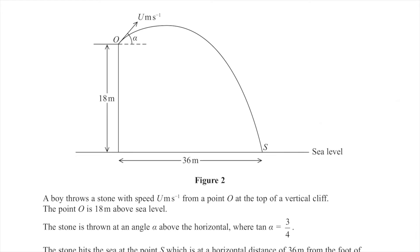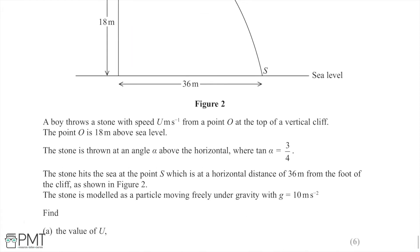In this question, a boy throws a stone with speed u meters per second from a point O at the top of a vertical cliff. Point O is 18 meters above sea level. The stone is thrown at angle alpha above the horizontal, where tan alpha equals 3 over 4. The stone hits the sea at point S, which is a horizontal distance of 36 meters from the foot of the cliff. The stone is modeled as a particle moving freely under gravity with g equal to 10 meters per second squared.